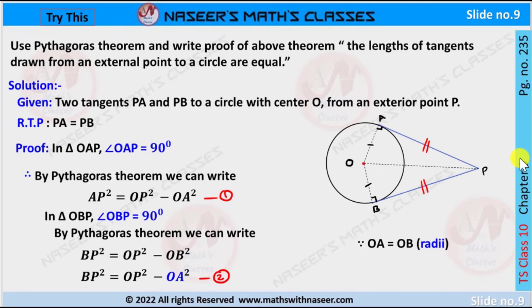This is page number 235, chapter 9. Use Pythagoras theorem and write proof of the above theorem. The theorem statement is that the lengths of the tangents drawn from an external point to a circle are equal.